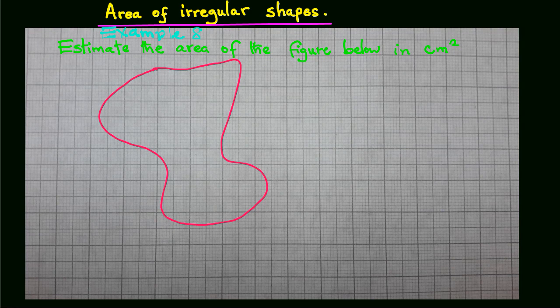Now the procedure involved in this estimation is that you need to draw the irregular shape over a grid, as shown in our diagram here, and then count all the complete squares enclosed within the shape.